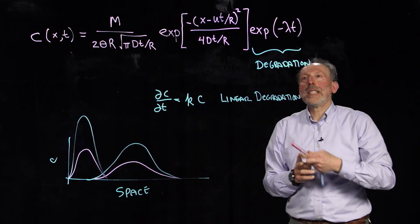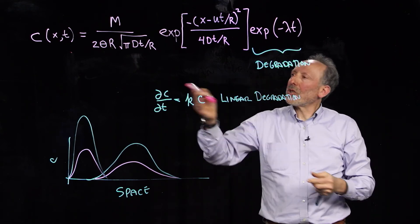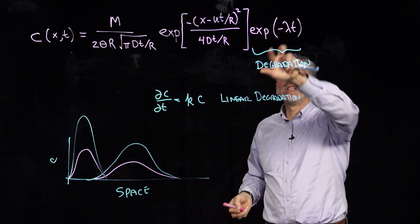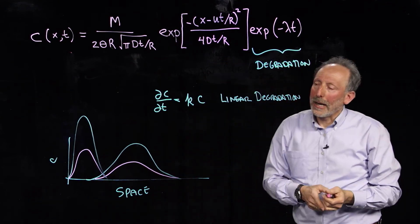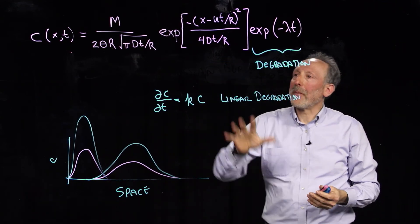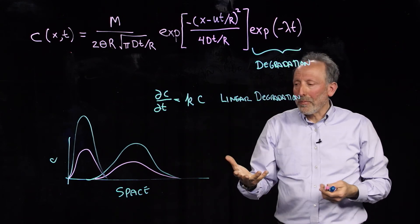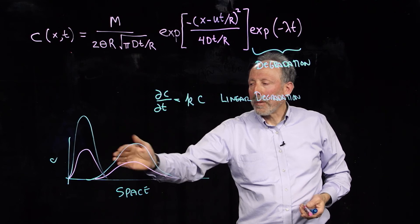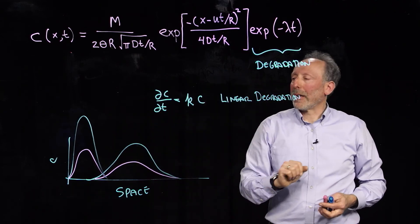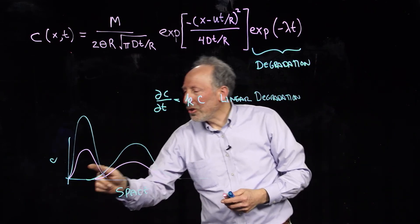And so, this description of concentration in time and space under the influence of degradation actually gives rise to very, very simple mathematics, where you can add multiple plumes, and you can simply track the shape of the plume, and account for the degradation by simply multiplying it by a rate of degradation. Notice that I should have drawn this one a little higher.